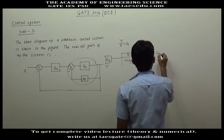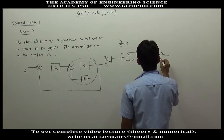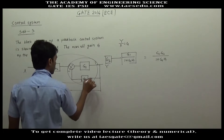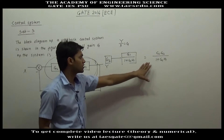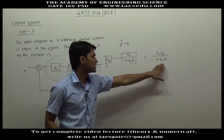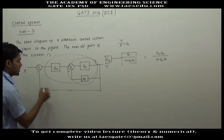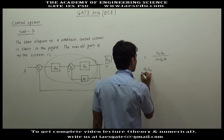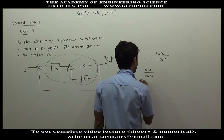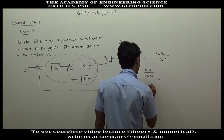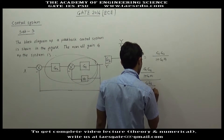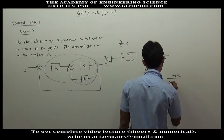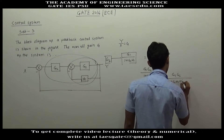The overall gain will be G1·G2 divided by 1 plus G1·H1. To this system we have a unity feedback. For unity feedback, the closed-loop system will be (G1·G2)/(1 plus G1·H1) divided by 1 plus (G1·G2)/(1 plus G1·H1), which gives G1·G2 divided by 1 plus G1·H1 plus G1·G2.